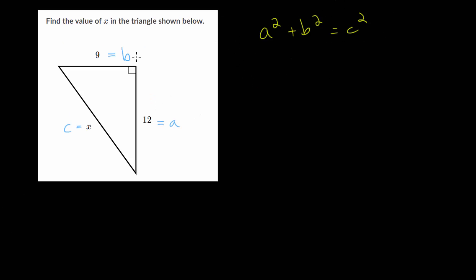So A, that is 12, and we're squaring that. B is 9, and we're squaring that. And C squared, well, that's X squared. So 12 squared, that's 144. 9 squared is 81. And if we add these together, we get 225.